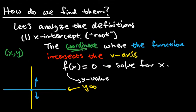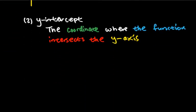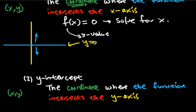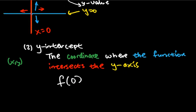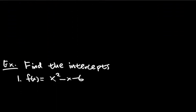Now let's look at the y-intercept. A coordinate again gives you an x-comma-y, somewhere where the function intersects the y-axis. By that same logic: if we start at the origin and go left or right, x decreases or increases, but exactly on the axis x equals zero. So to find the y-intercept, we find where x equals zero — evaluate f(0) — just plug zero into all the x's.